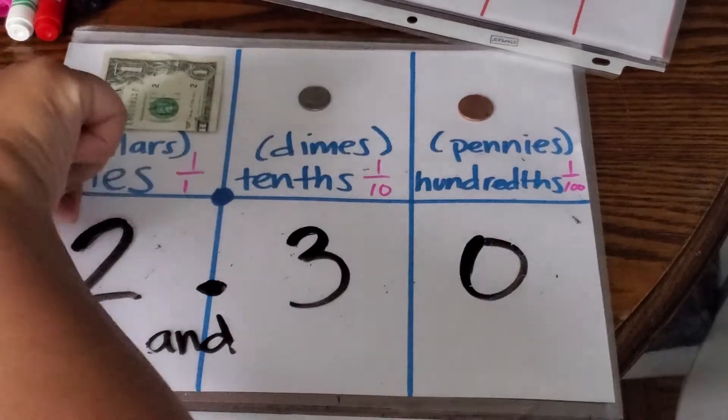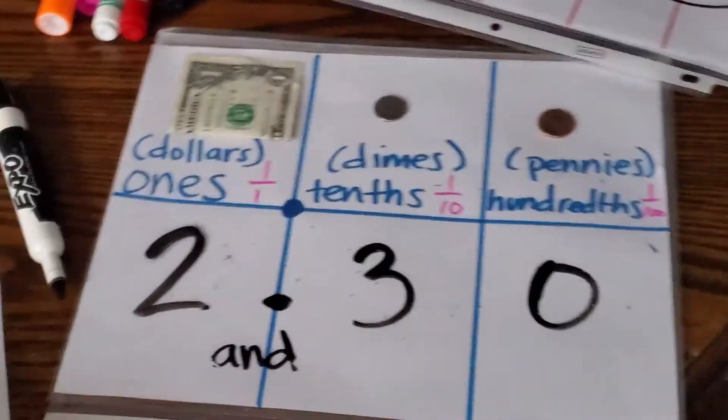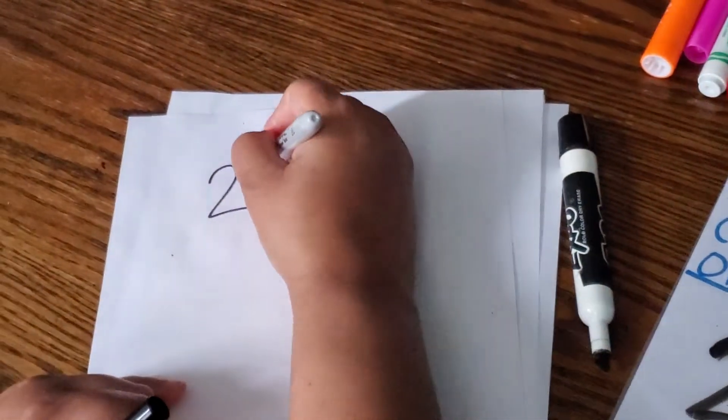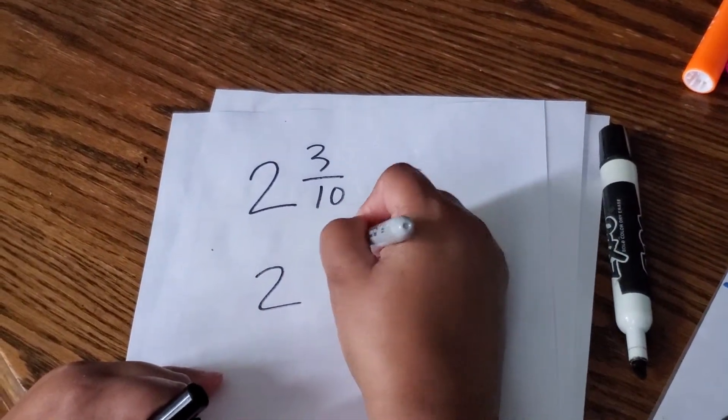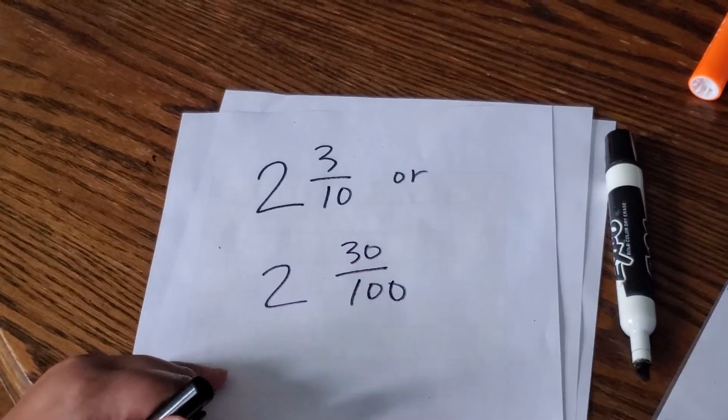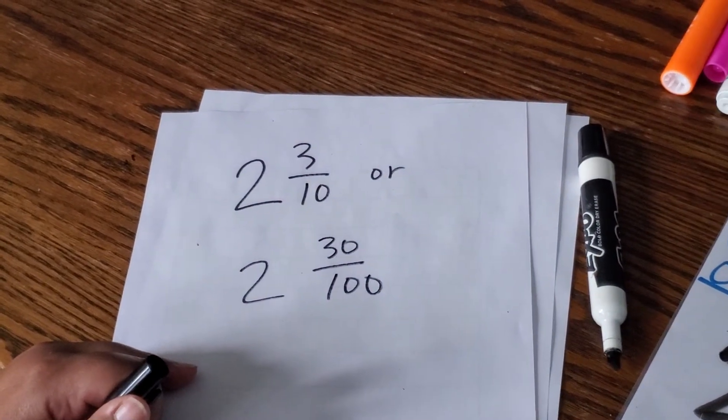If I wrote it out, I could say, as a fraction, I could say two and three-tenths or two and thirty hundredths. Both of those would be correct.